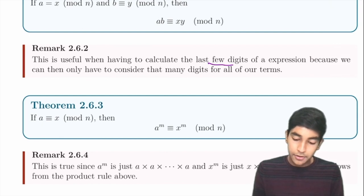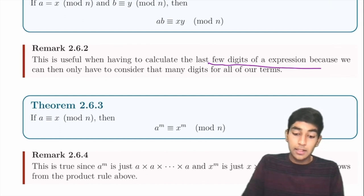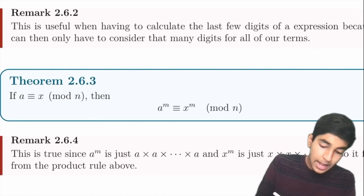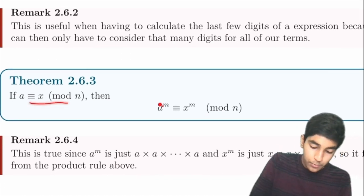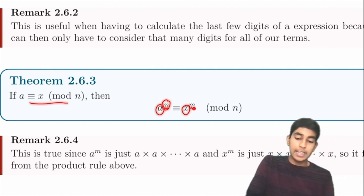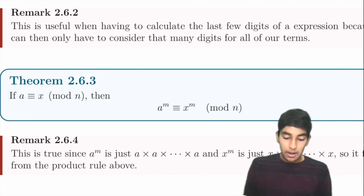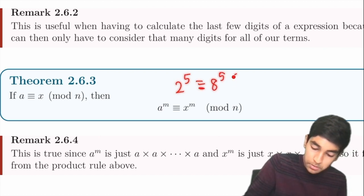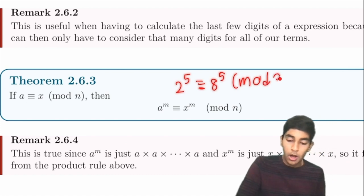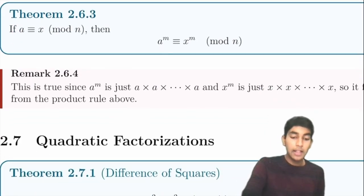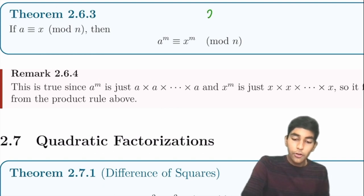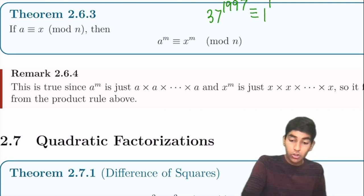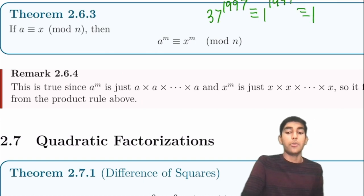Modular arithmetic is also useful for finding the last few digits: last digit is mod 10, last two digits is mod 100. Also, if A ≡ x (mod N), then Aᵐ ≡ xᵐ (mod N). For example, 37^1997 mod 3: since 37 ≡ 1 (mod 3), it's just 1^1997 = 1 mod 3.